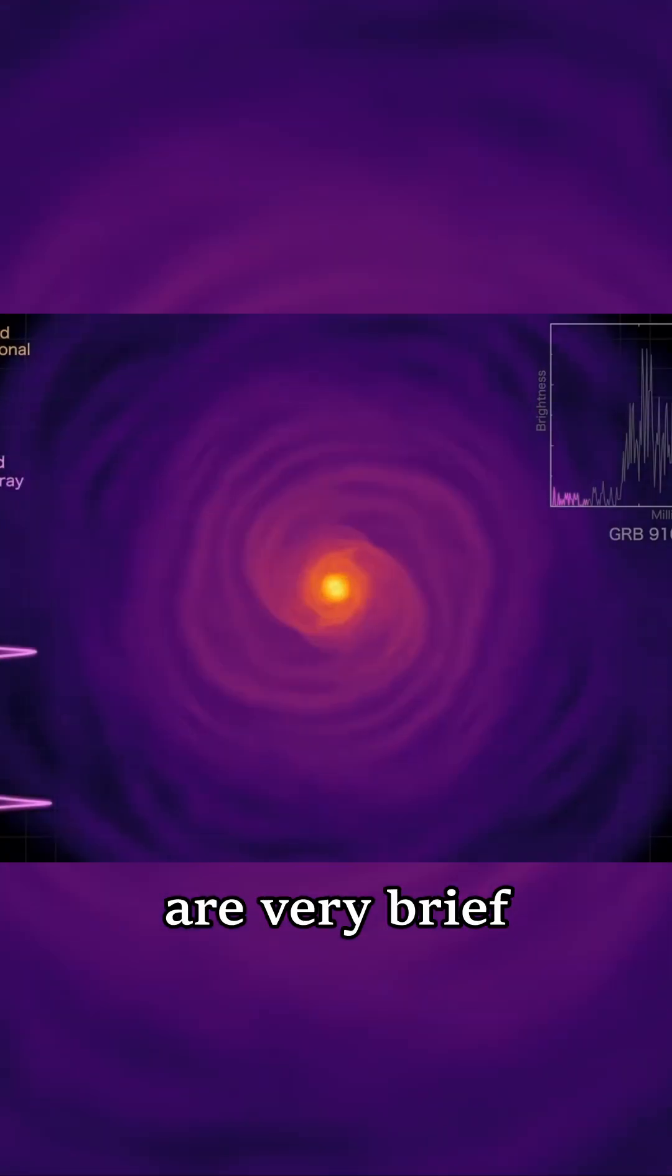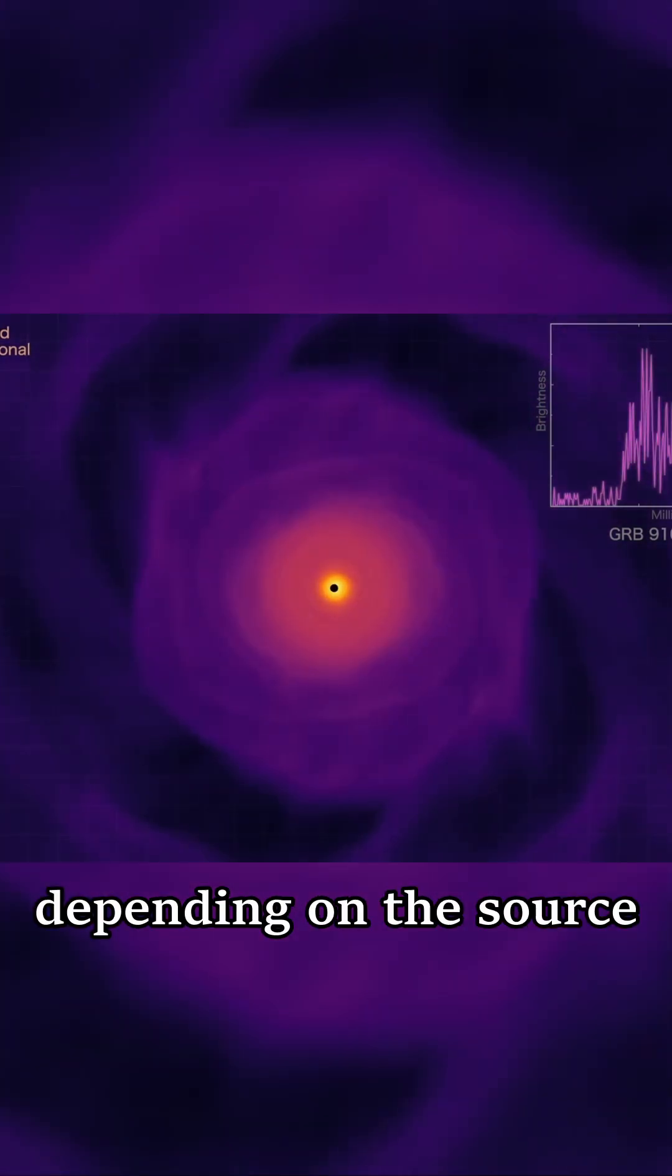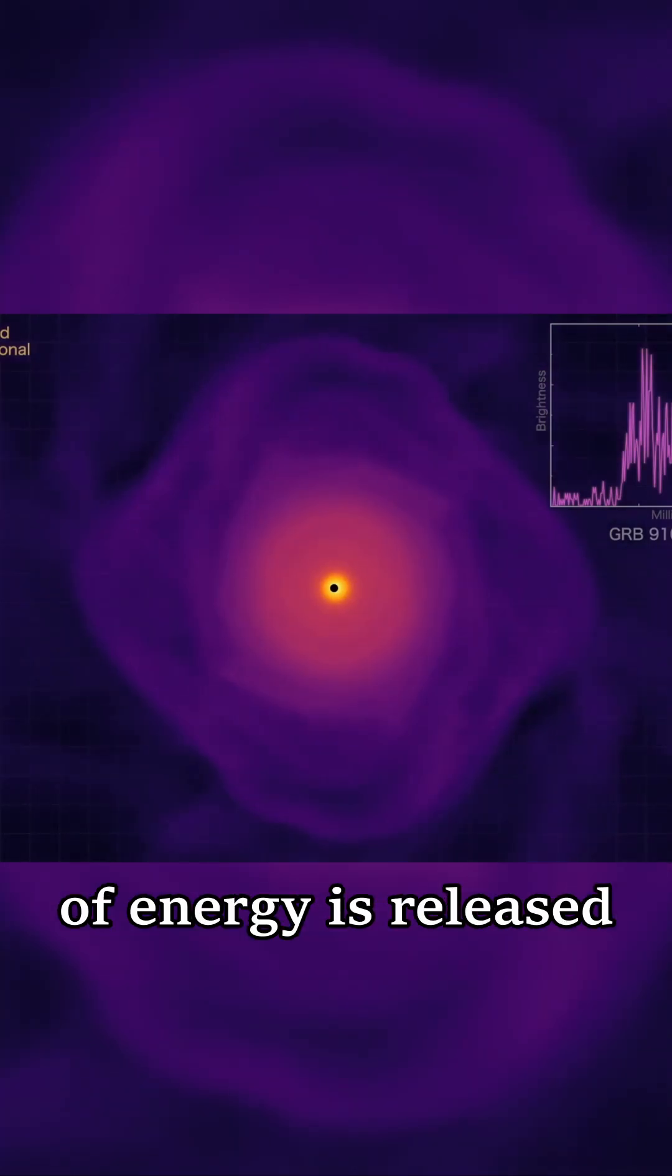Gamma-ray bursts are very brief, typically lasting anywhere between a few milliseconds and a few minutes or longer, depending on the source, though in this brief amount of time a dangerous amount of energy is released.